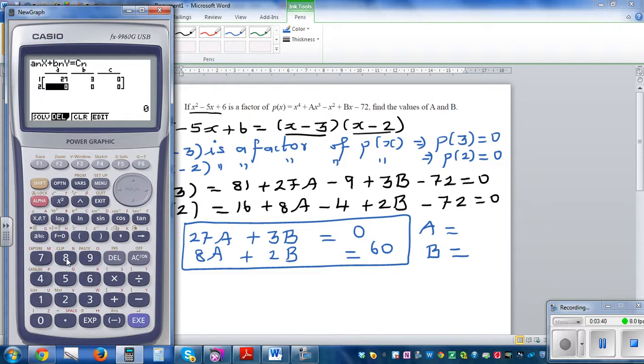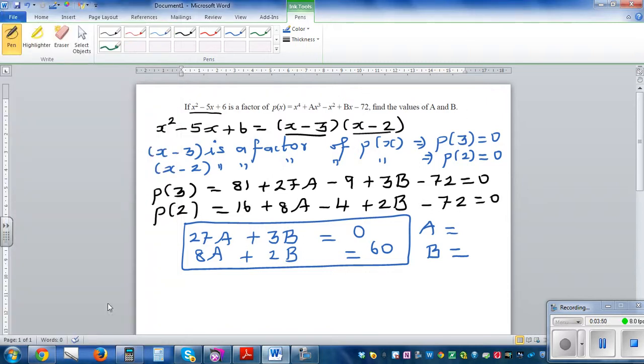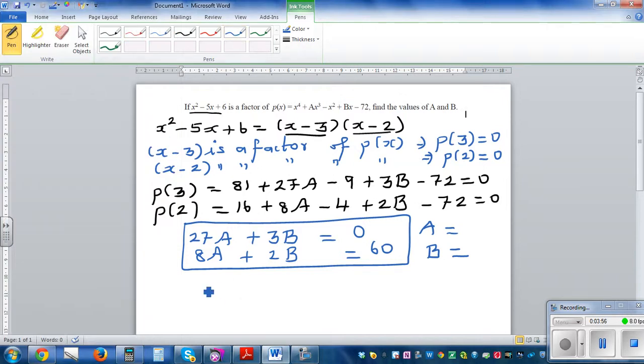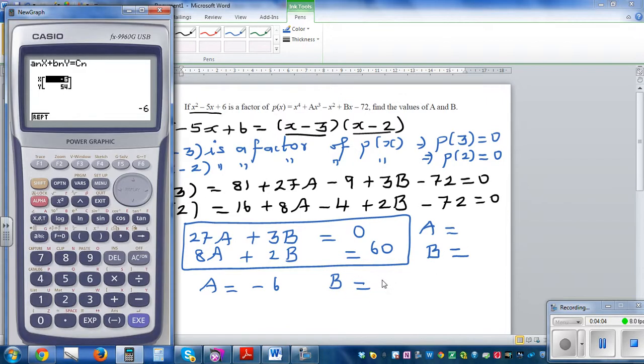I'll put 27, 3, and 0. For the second equation it is 8, 2, and 60. Solve. So A is minus 6 and B is 54. A is minus 6 and B is 54.